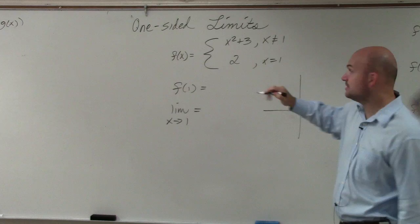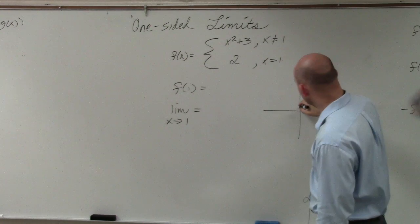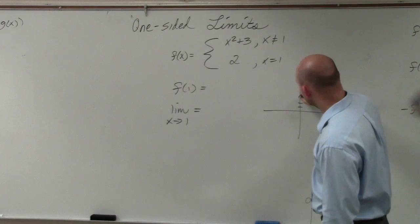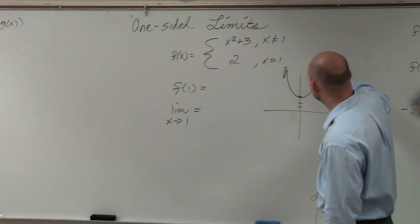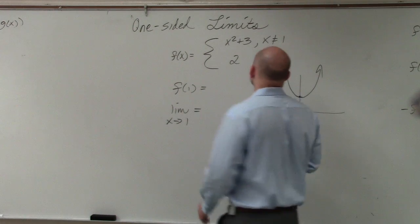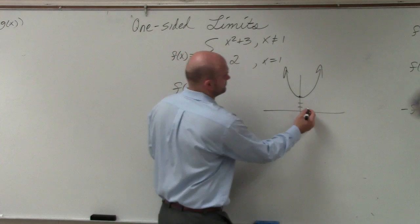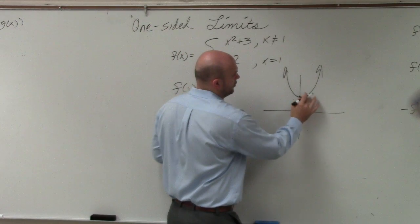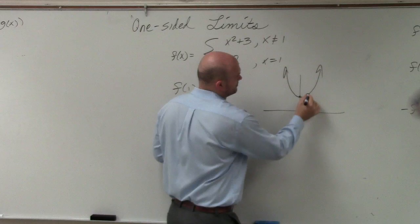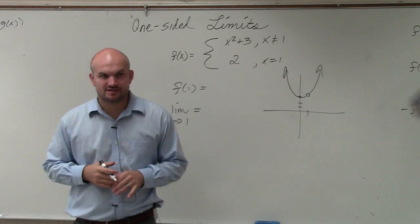Obviously, x squared is going to be a parabola. Up 3 shifts it by 1, 2, 3. So the graph looks something like this. However, at x equals 1, there's going to be a hole because it cannot exist at x equals 1.